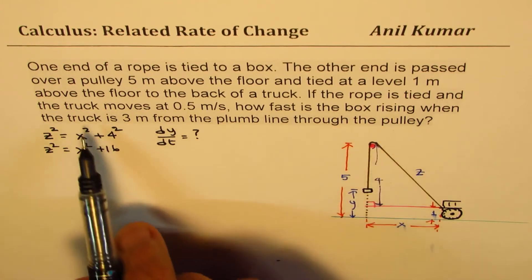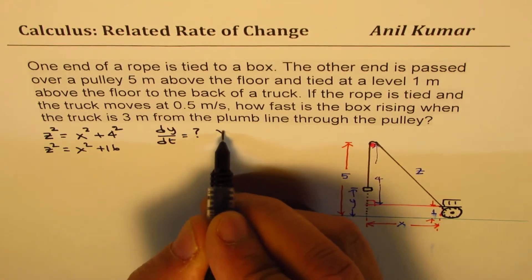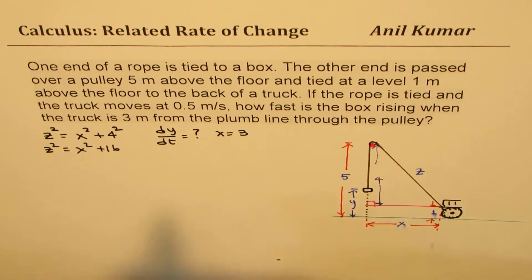How fast is the box rising when the truck is 3 meters? When X equals 3. When truck is 3 meters from the plumb line, that's your line. So if X equals 3, what is Z? Let's calculate this out also.